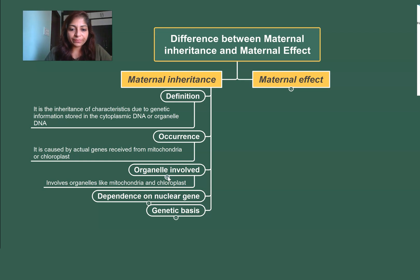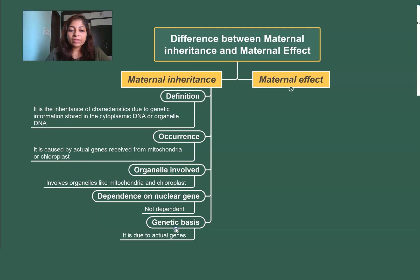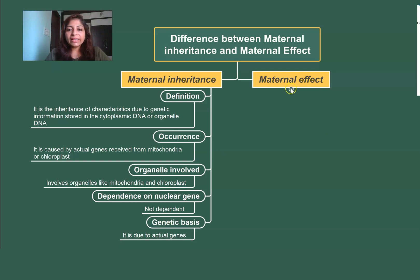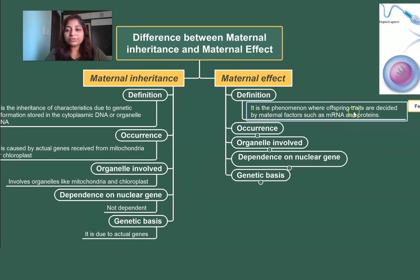The organelles involved are mitochondria and chloroplast, which have their own DNA. There is no dependency on the nuclear gene — the characters showing maternal inheritance are not at all dependent on the nuclear gene of the mother or of the zygote. It is decided by the genes present in the organelles like mitochondria and chloroplast. Genetic basis: yes, it is based on actual genes, but these genes are not present in the nucleus — they are present in the organelles.